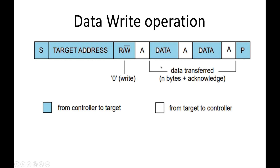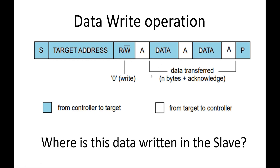Now I have a question for you: the master is sending data to the slave, but where is this data written in the slave? Nowhere has it been specified where the slave should write this data. What should the slave do with this data? If you know the answer, please write it down in the comment section, otherwise I will answer it in the upcoming videos.